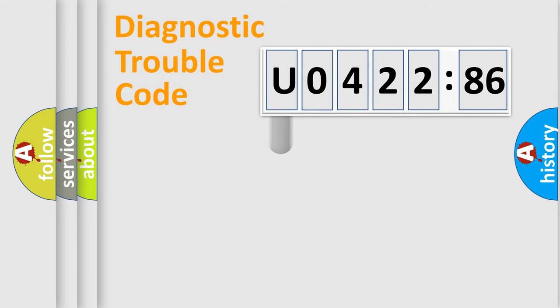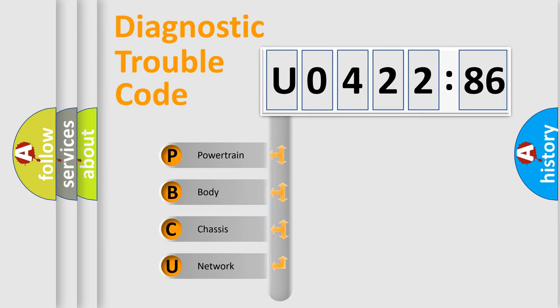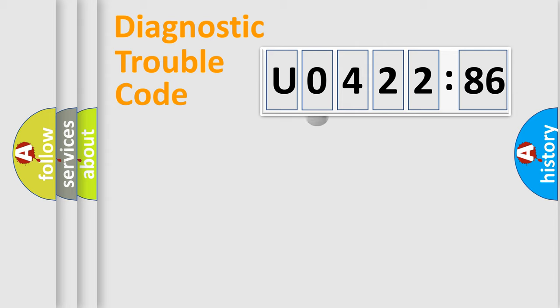First, let's look at the history of diagnostic fault code composition according to the OBD2 protocol, which is unified for all automakers since 2000. We divide the electric system of automobile into four basic units: Powertrain, Body, Chassis, and Network.